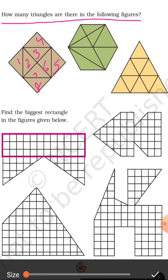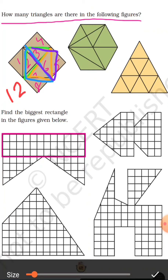Now students, you have to count the biggest triangles. This is 9, and this triangle is 10. Now if we combine triangles 2 and 7, you get triangle 11. Then combine 3 and 6 to make another triangle. So your total number of triangles is 12.